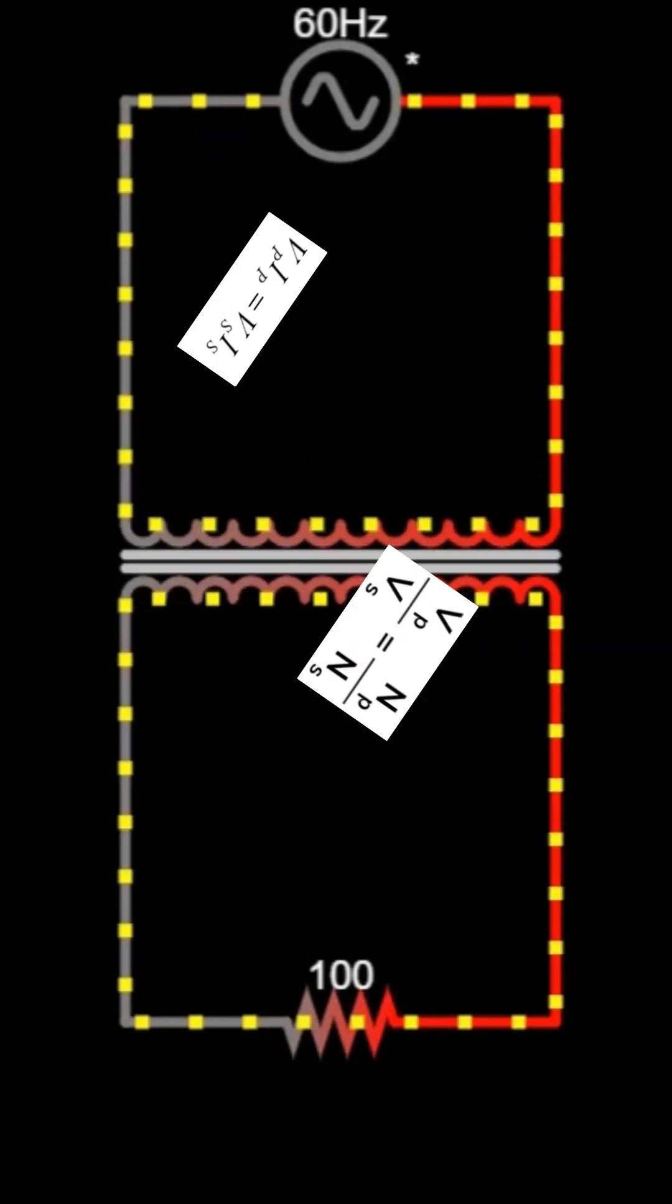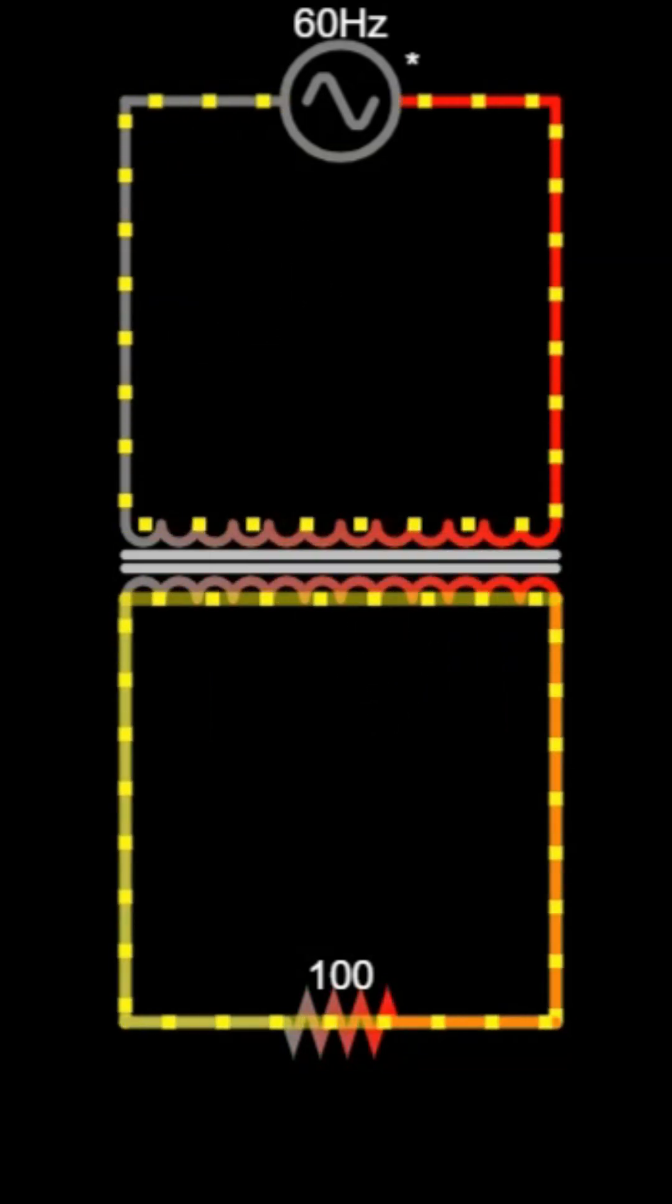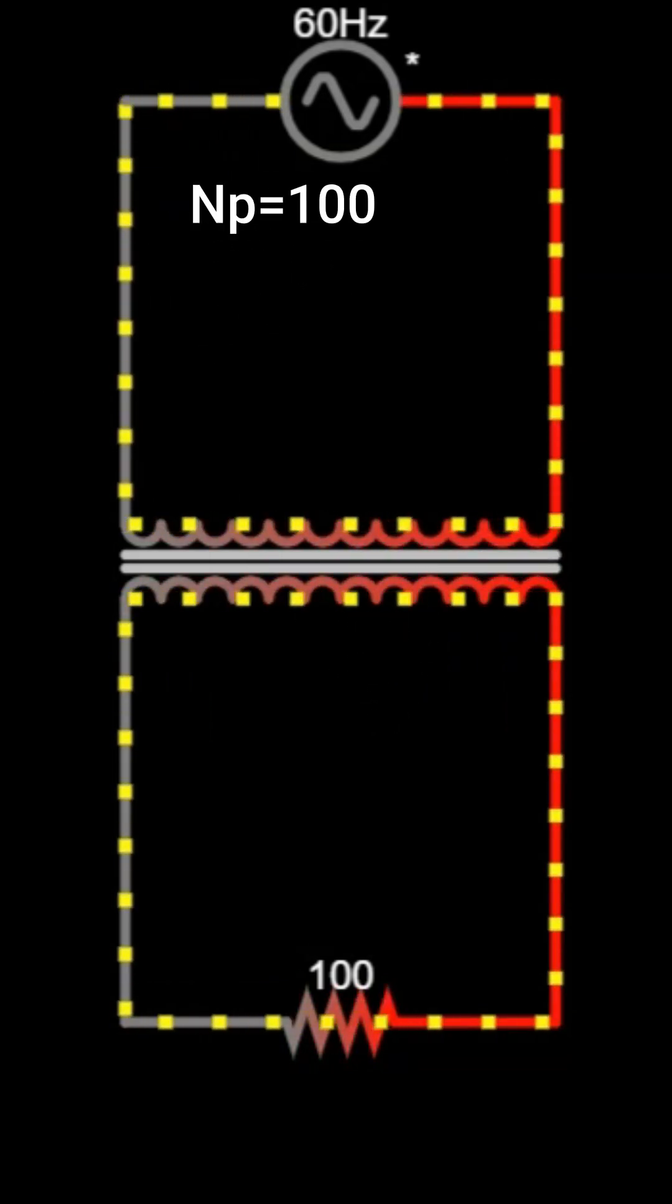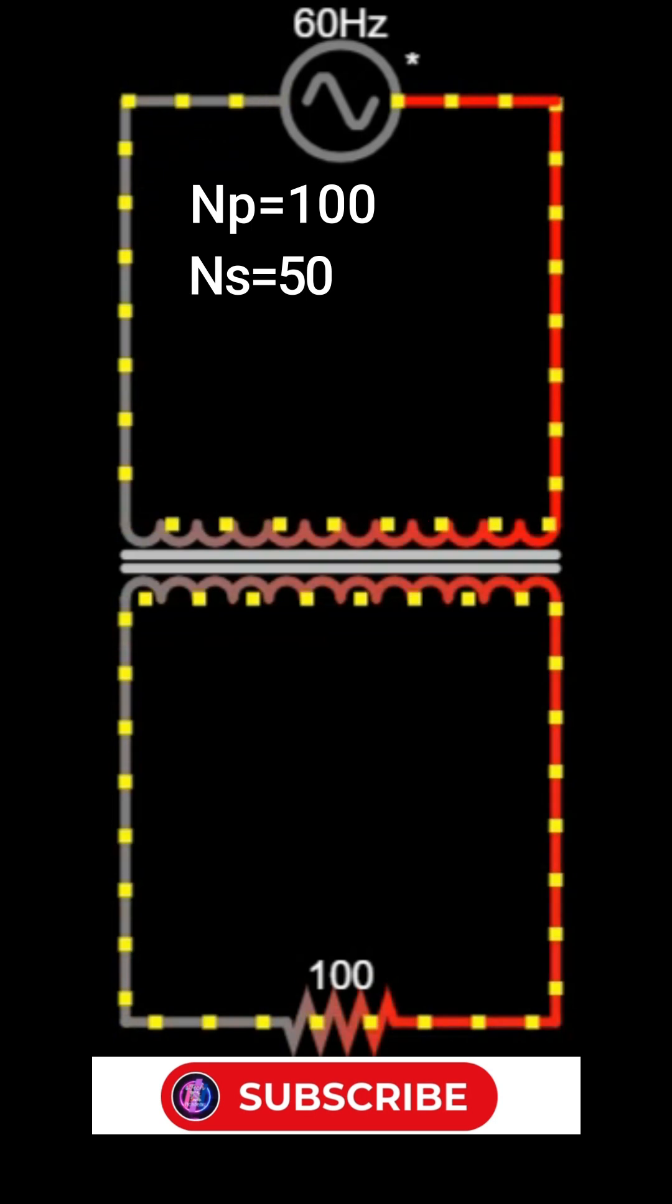Now let's use these formulas in a real example. Suppose the primary coil has 100 turns and the secondary coil has 50 turns.